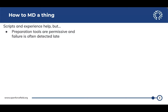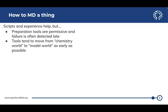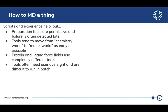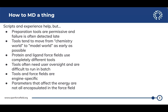Scripts and experience help, but preparation tools are permissive, and failure is often detected late. Tools tend to move from chemistry world to model world as early as possible. Protein and ligand force fields use completely different tool sets, and you're left to figure out how to put them together at the end if you want to mix and match. The tools often need user oversight and are difficult to run in batch in an automated pipeline. The tools and force fields are often engine-specific, you can't easily interoperate, and the parameters that affect the energy are not all encapsulated in the force field.